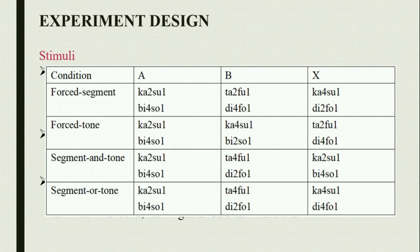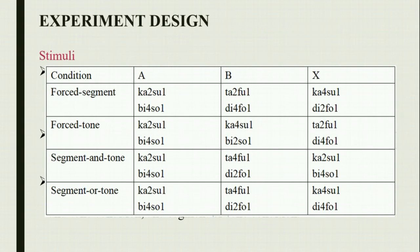An ABX test was adopted as the test method with four conditions: the false segment condition, false tone condition, segment and tone condition, and segment or tone condition. In the segment and tone condition, listeners are provided with accurate segments and tone in A or B. In the segment or tone condition, A or B contains only one correct dimension — either segment or tone. For example, the accurate tone appears in A and the accurate segment appears in B, or vice versa. The segment or tone trial requires listeners to choose one dimension, being forced to ignore the other. Comparing the results of these two trials helps us examine how bilinguals and Cantonese native speakers distribute their attention between tones and segments.